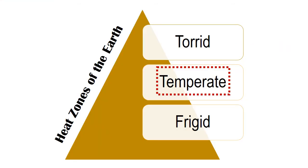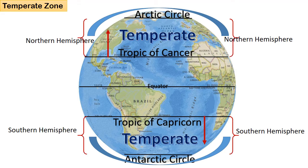Now, we come to the Temperate Zone. The Temperate Zone is split into two zones on either side of the Torrid Zone and has temperatures ranging from warm to cool. It is the part of the Earth's surface between the Arctic Circle and the Tropic of Cancer in the Northern Hemisphere, and between the Antarctic Circle and the Tropic of Capricorn in the Southern Hemisphere. Average yearly temperatures in these regions are not extreme — not burning hot and not freezing cold. Temperate means moderate.